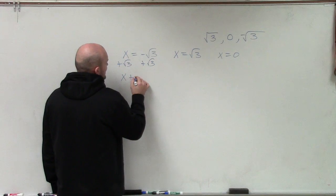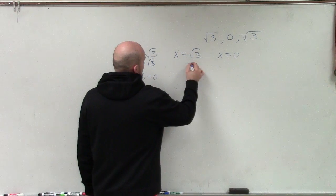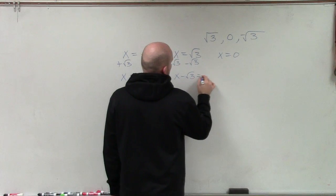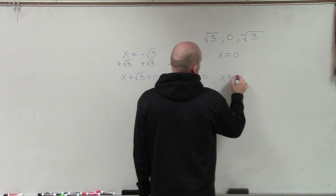So therefore, I have x plus the square root of 3 equals 0 minus the square root of 3 minus the square root of 3. x minus the square root of 3 equals 0. And then x equals 0.